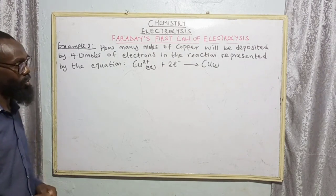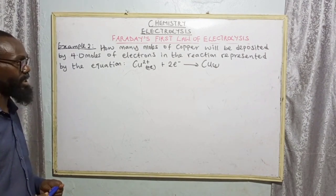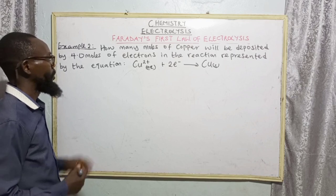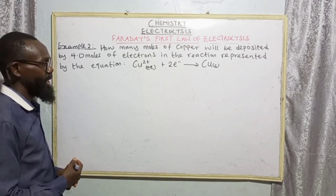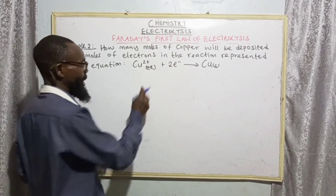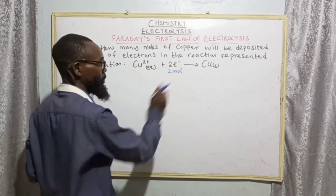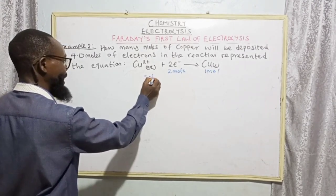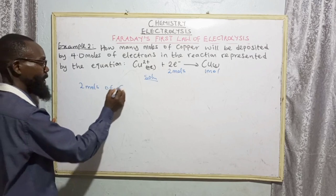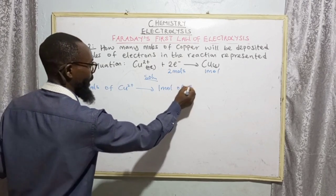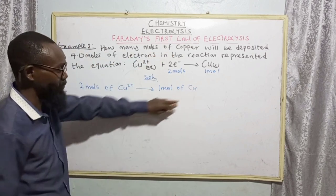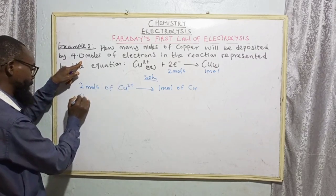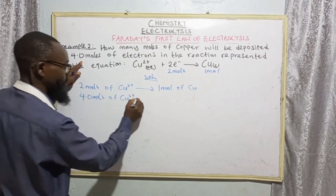Example 2. How many moles of copper will be deposited by 4.0 moles of electrons in the reaction represented by the equation? From this equation given to us, we are asked to find the number of moles of copper deposited. We have 2 moles of electrons here — 2 moles will give us 1 mole of copper. So 2 moles of Cu²⁺ will deposit 1 mole of copper. Now we need to find how many moles of copper will be deposited by 4.0 moles of electrons.